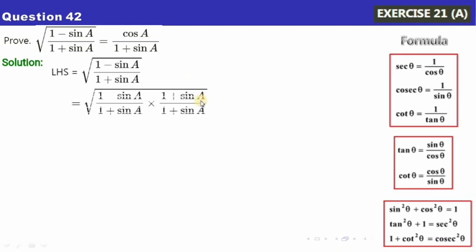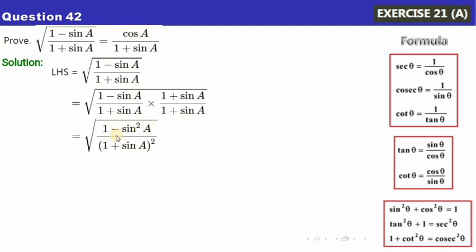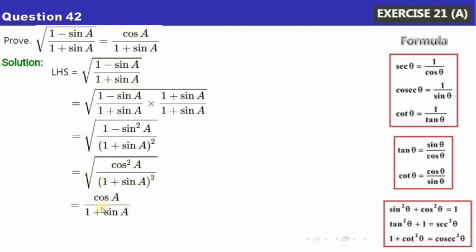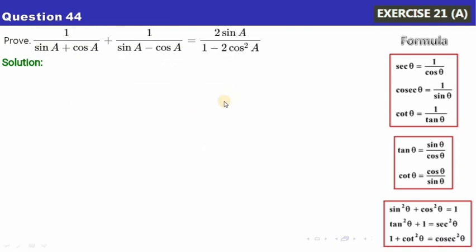The next problem is similar. Since the right-hand side has (1 plus sinA) in the denominator, we multiply both numerator and denominator by 1 plus sinA. The numerator gives (1 minus sinA)(1 plus sinA) = 1 minus sin²A = cos²A, and the denominator gives (1 plus sinA)². Taking the square root gives cosA/(1 plus sinA), which is the required result. You may pause and note the solution.